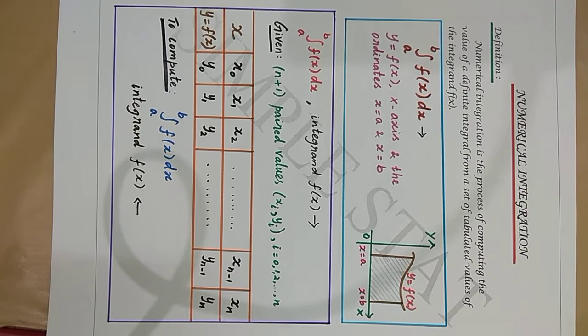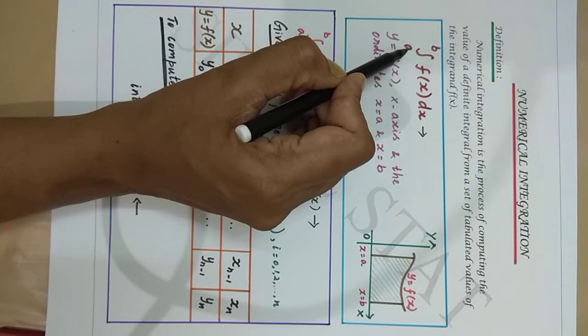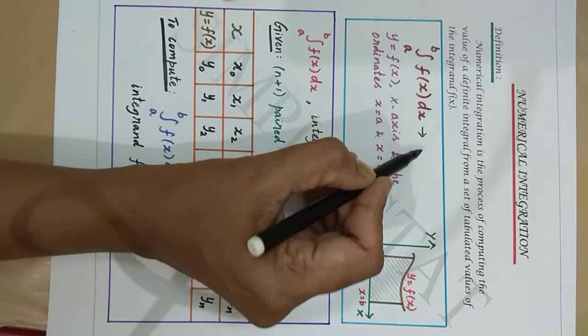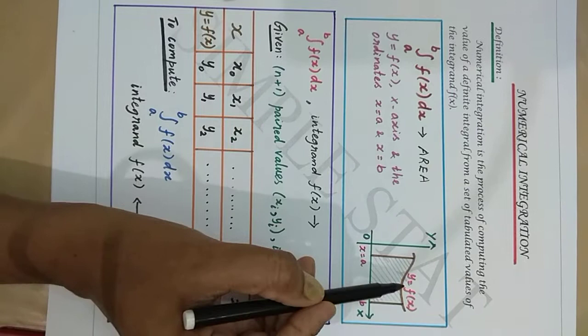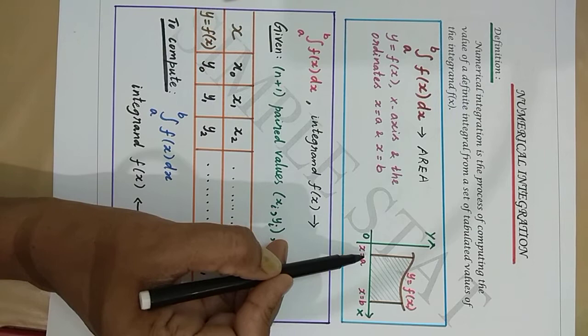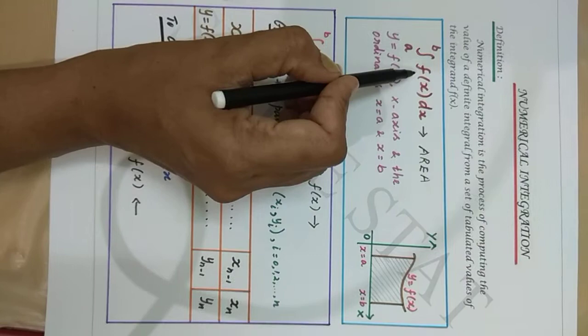Numerical integration: we know that integral over a to b of f(x) dx is a definite integral and represents the area between the curve y equal to f(x), the x-axis, and the ordinates x equals a and x equals b, where the integrand f(x) is known and is integrable.